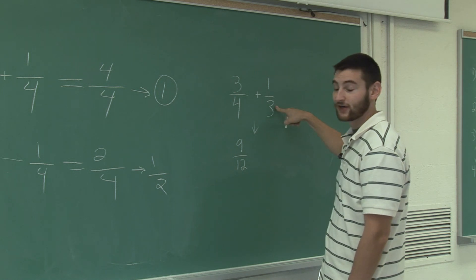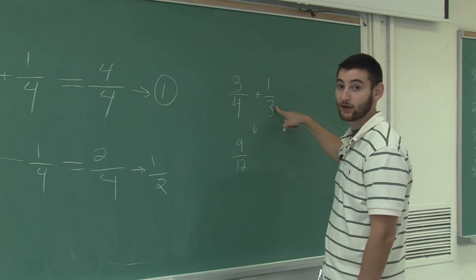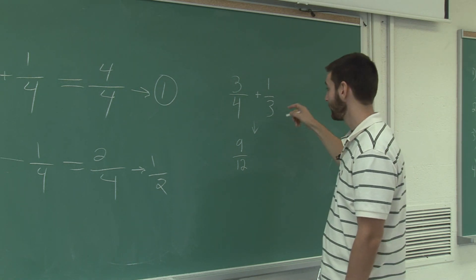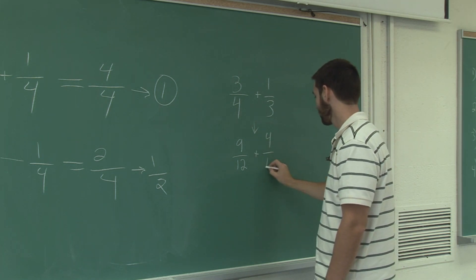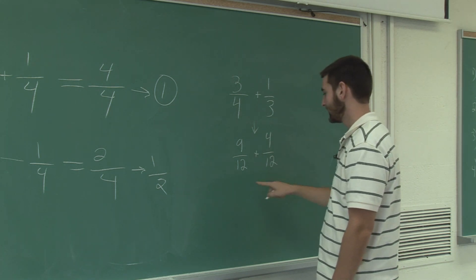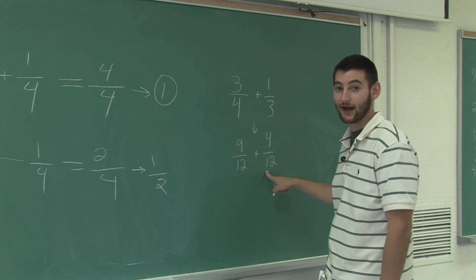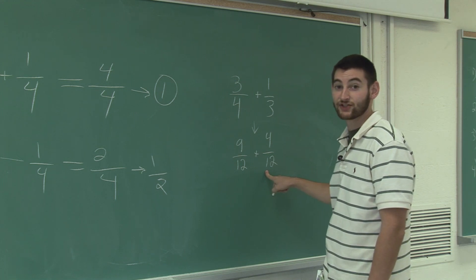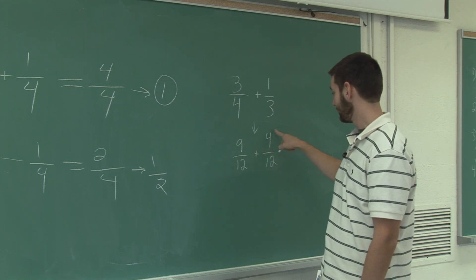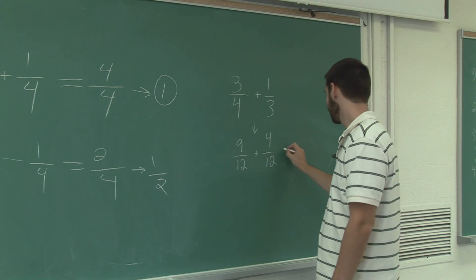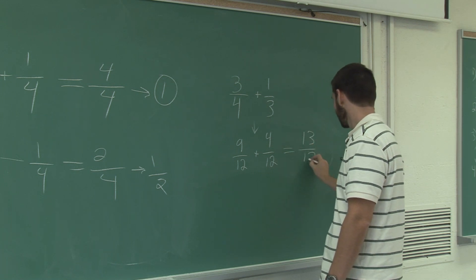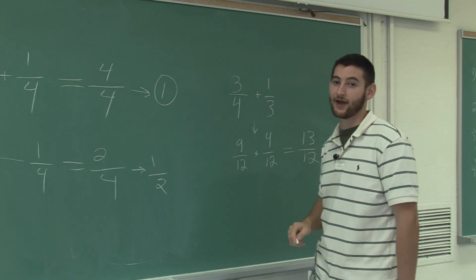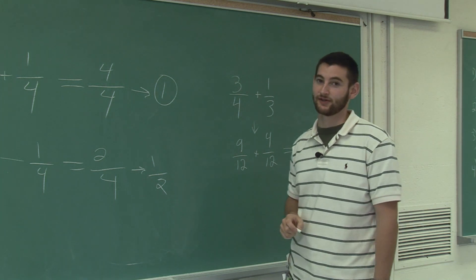To get this denominator to be 12 I multiply by 4, so I must do the same for the numerator as well. Now that I have fractions with the same denominator, I can just add the numerators. That's how you add fractions with different denominators.